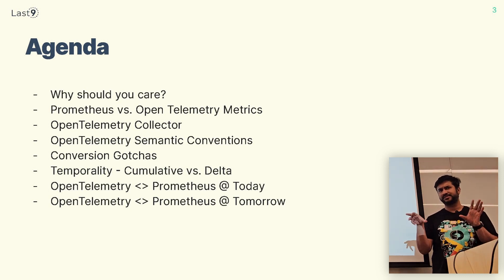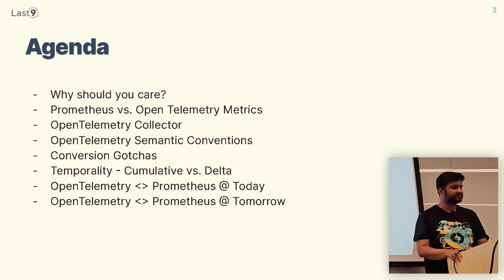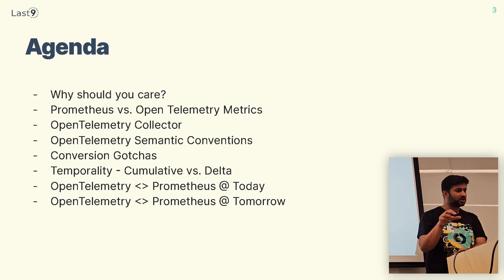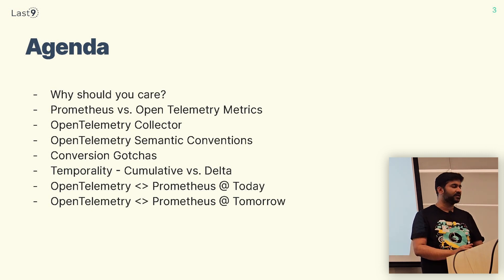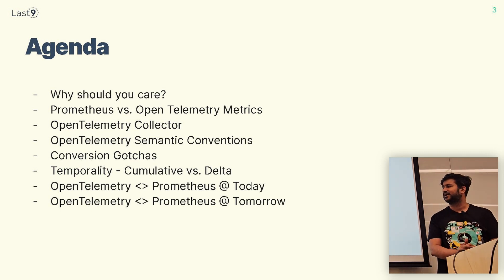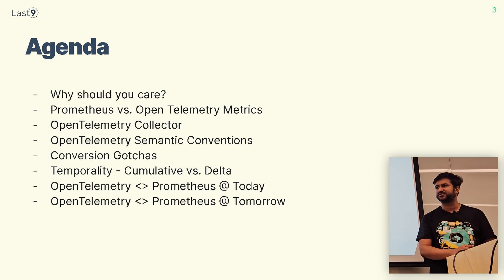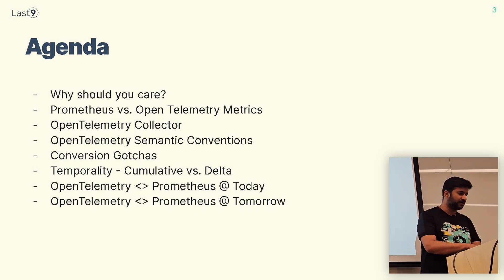In the metrics ecosystem, there are two giants — Prometheus is one tool people use for monitoring, and OpenTelemetry is another way of doing metrics. I'll talk about some differences between both of them, a component called the OpenTelemetry collector which is a centralized component for processing data and transferring it to multiple destinations. I'll cover semantic conventions around standardization, signal correlations between logs, metrics, and traces, compatibility and conversion issues between Prometheus and OpenTelemetry data, and where the ecosystem and roadmap are heading.